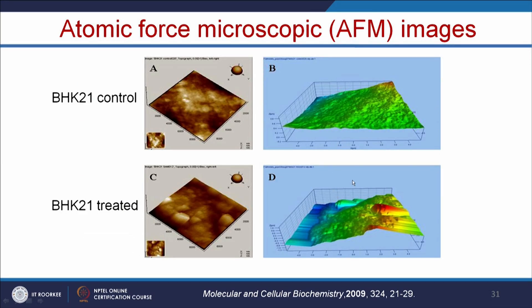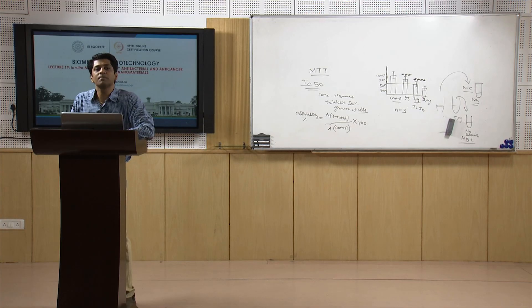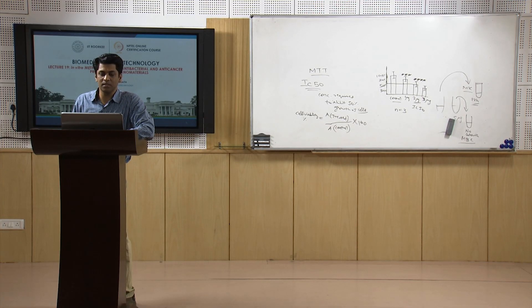Atomic force microscopy (AFM) can study the surface roughness of control versus treated cells. Control cells show a smooth surface, while treated cells show changed roughness. By measuring surface roughness, we can assess the status of the cell membrane.